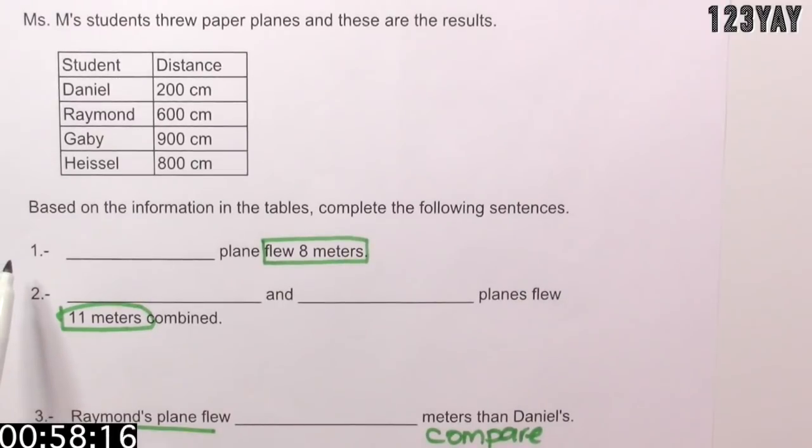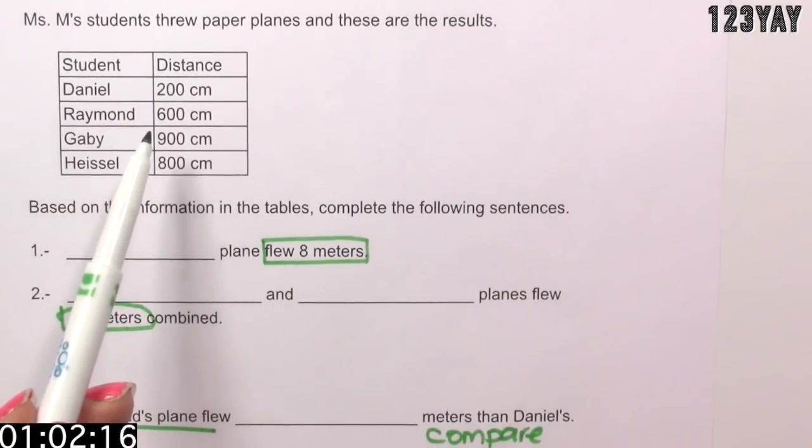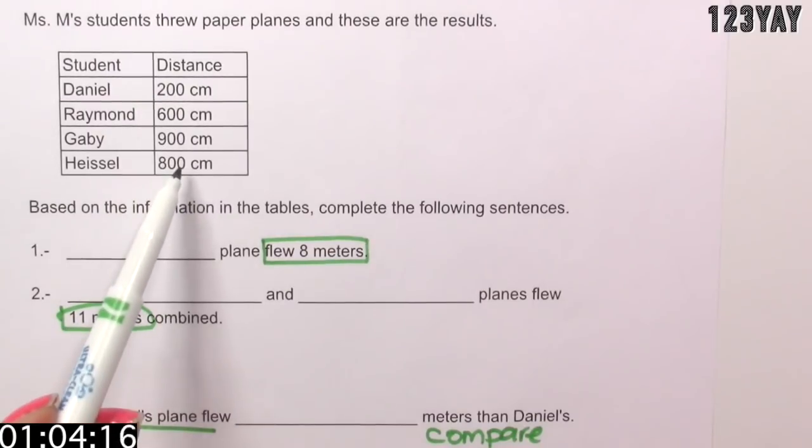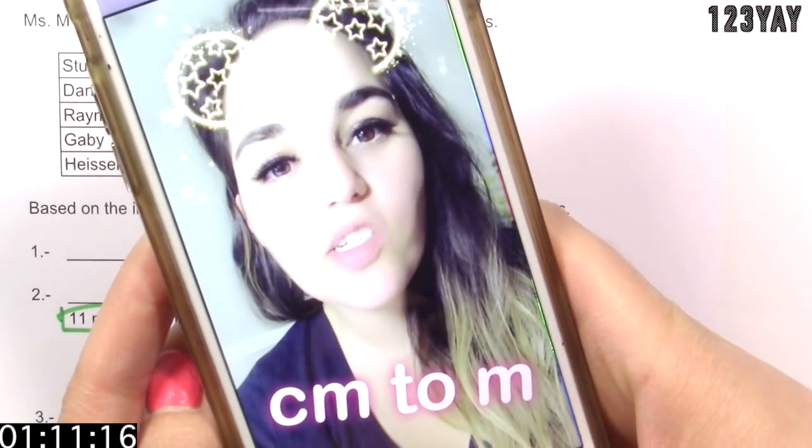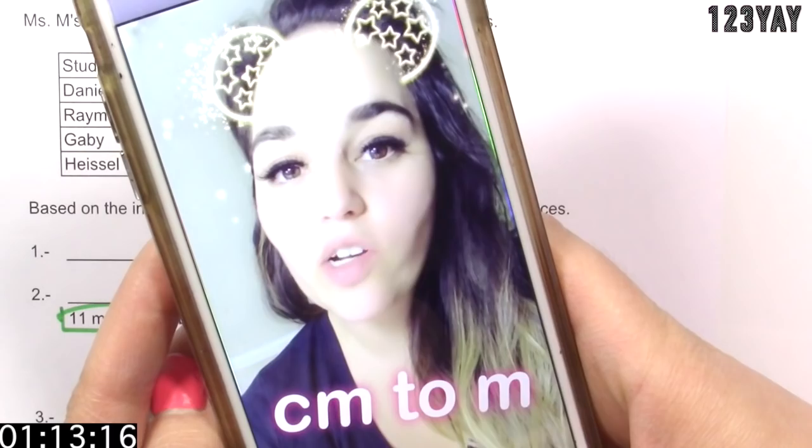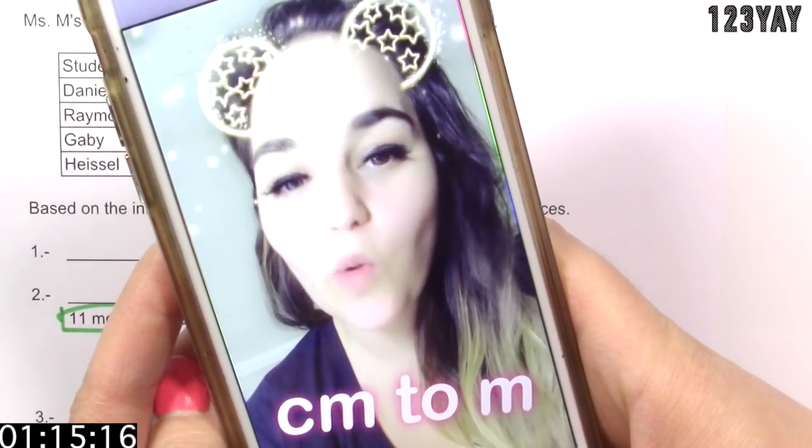Let's start at number 1. 8 meters? We have a problem. All the distances here are in centimeters and here we have meters. What do we do? Convert the centimeters to meters. 100 centimeters equal to 1 meter.